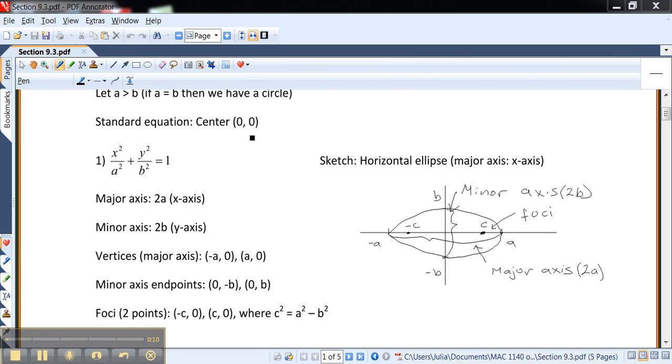The most important thing we have to remember is that a is the major part. So a is considered to be greater than b. If they are equal then we have a circle. The idea is that we have x² over a² plus y² over b² equals 1. If the bigger number, the square of it, is under the x, then we definitely have a horizontal ellipse, which is evident right here.